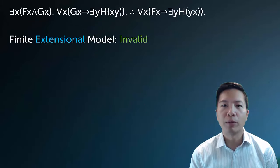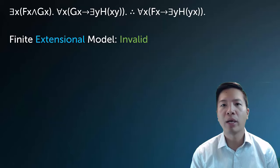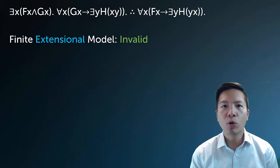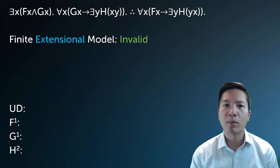So here's an example. I want to create a finite extensional model or interpretation that shows this argument is invalid. All I have to do is look at what each premise means one at a time and the conclusion, and then construct a model as I go along. I don't need to worry about a natural language interpretation here — I can just do this at a purely abstract level. So I set up my model. My interpretation just stipulates the definition of my universe of discourse, my F predicate, my G predicate, and my H predicate.